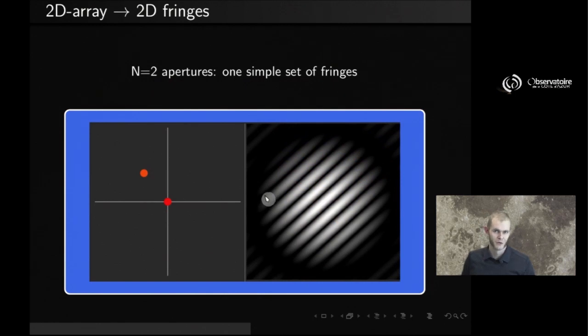The simplest case is, of course, to go back to the 2D array. So here we just have two apertures, S1 and S2, that produce a set of fringes like so. And the fringes, the axis describing the fringes, happens to be along the direction of the baseline separating the two apertures. The period of these fringes is, again, going to be inverse proportional to the baseline, the length of the baseline.